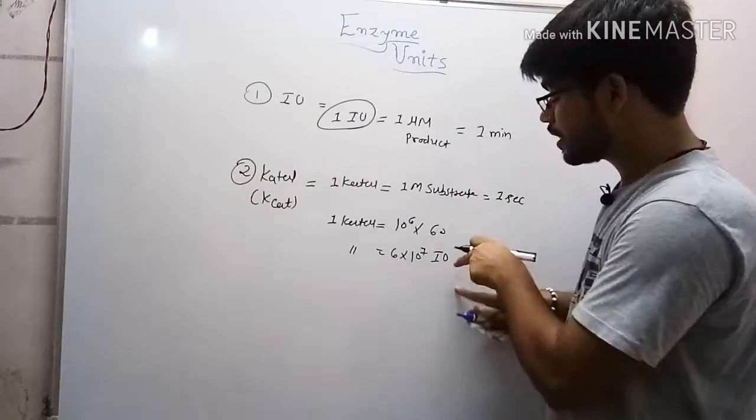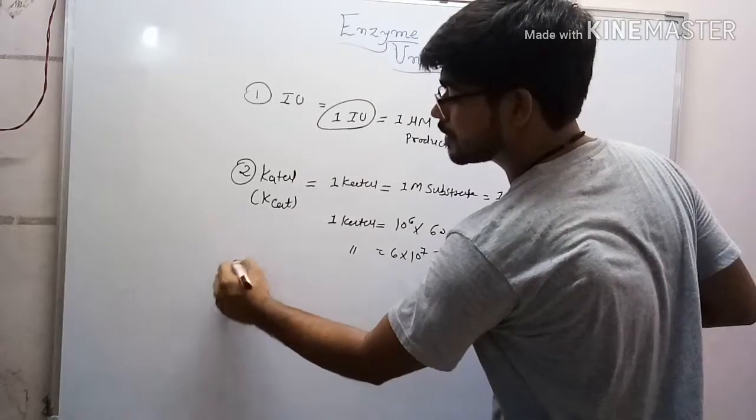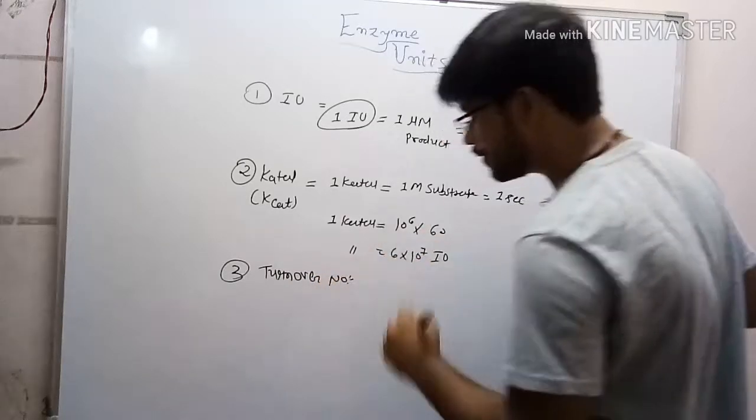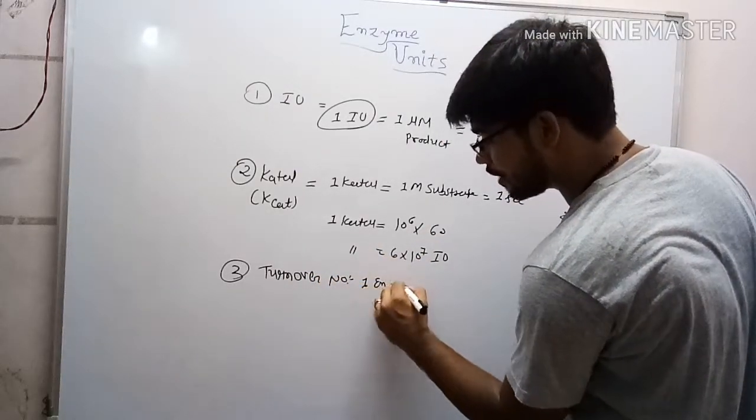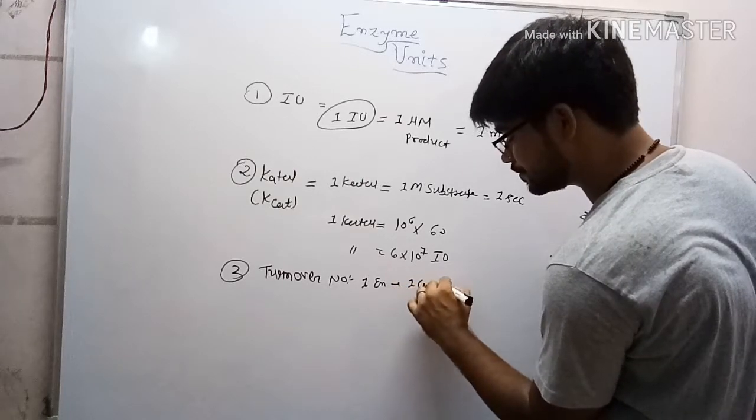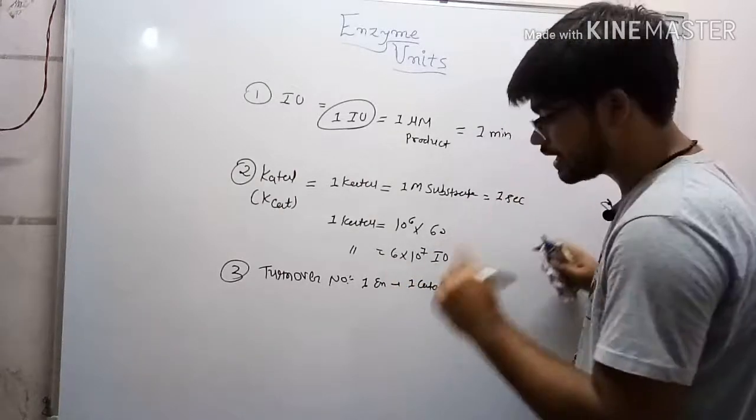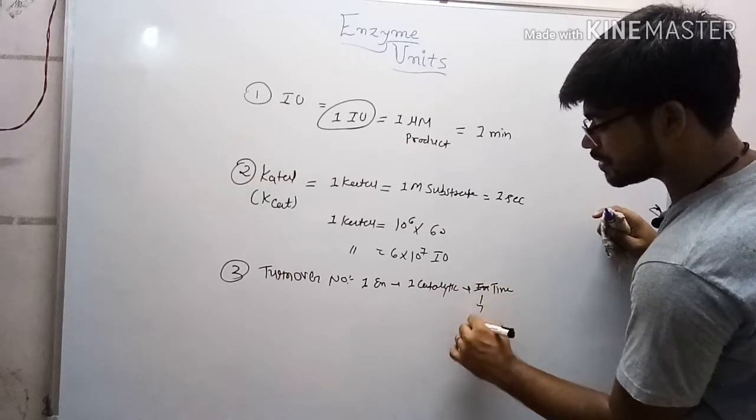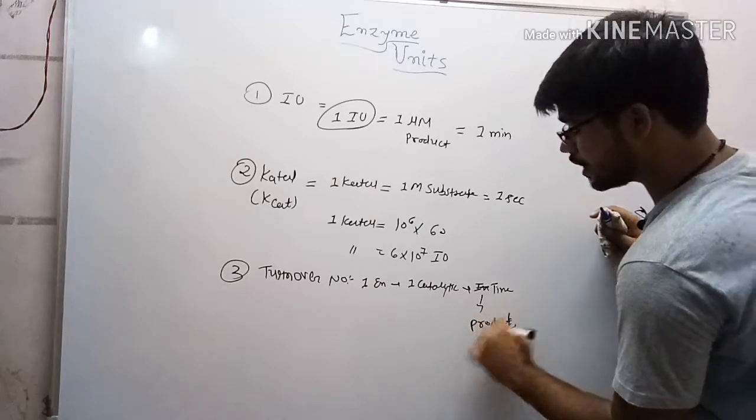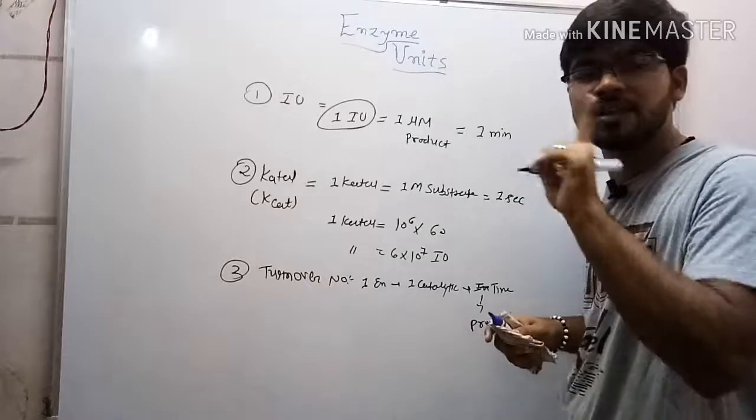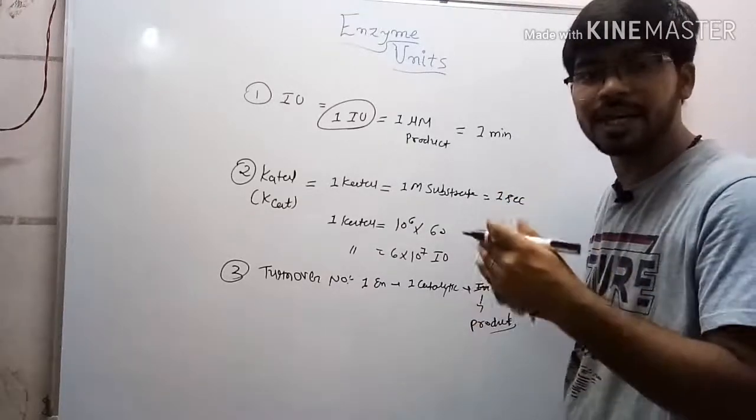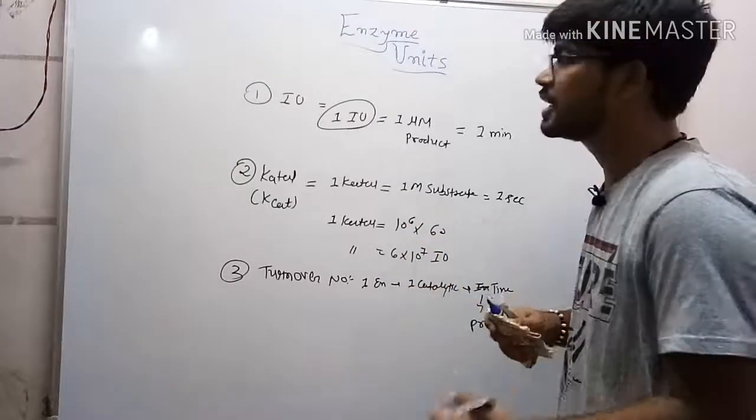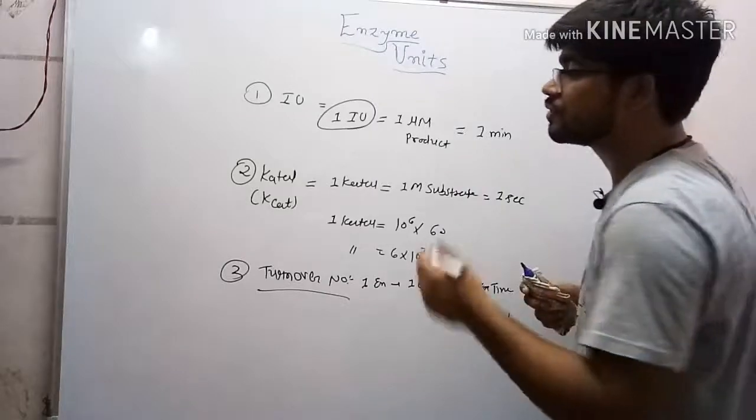The third one is turnover number, which is generally used now. It means how much product is formed by one enzyme at one particular catalytic site in a particular time interval. In other words, at one catalytic site in unit time, how much product the enzyme catalyzes or produces. This is known as the turnover number and is mostly used.